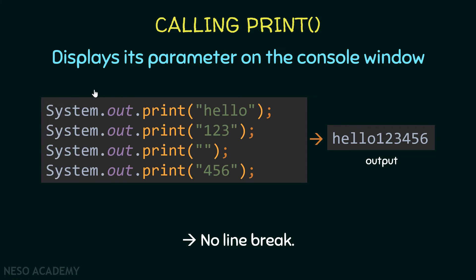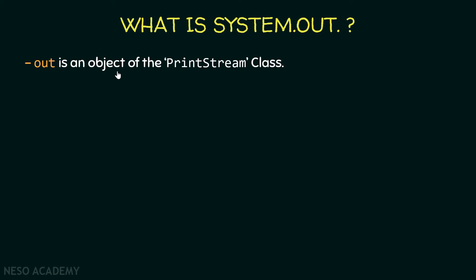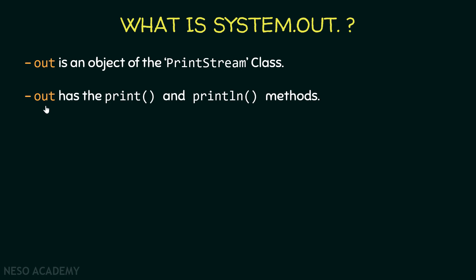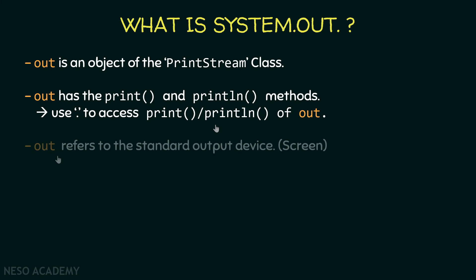When we use the print method we type System.out.print. So what is System.out? The 'out' here is an object of the PrintStream class. Java has a class called PrintStream, and Java developers created an object from this class called 'out'. This object contains methods — the print method and the println method. An object can contain methods just like a class does.